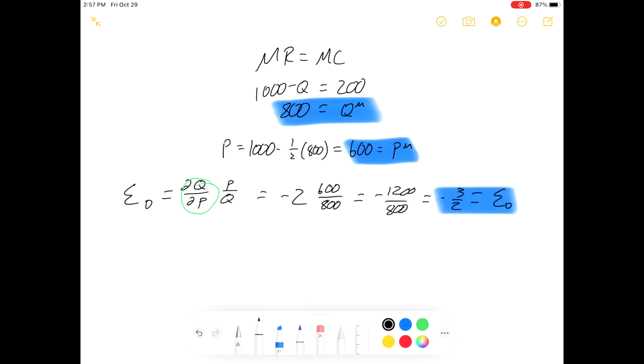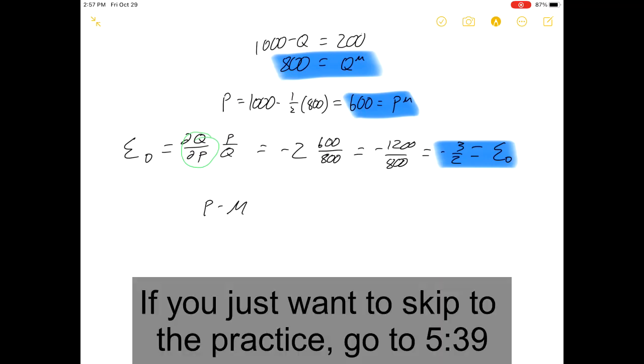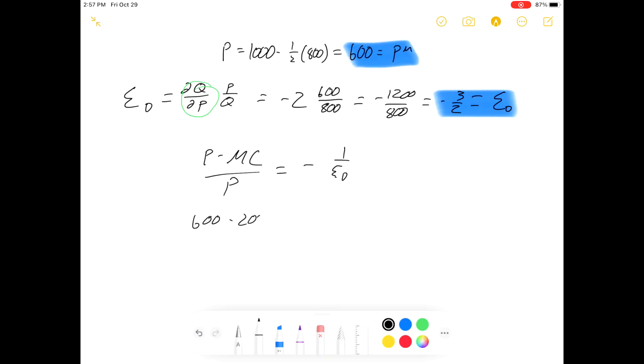First thing, let's verify if our Lerner index works, and then we'll talk about what it means. So let's see, that's 600 minus 200 over 600 equals 400 over 600, which is two thirds. Okay, there's the left hand side. Let's see if that is equal to negative 1 over negative three halves. Well, those negatives cancel out, and then one over three halves is two thirds. All right, so this chunk comes out to two thirds. This chunk comes out to two thirds. We verified it, at least for this example. If you want a full proof, go look in your book.